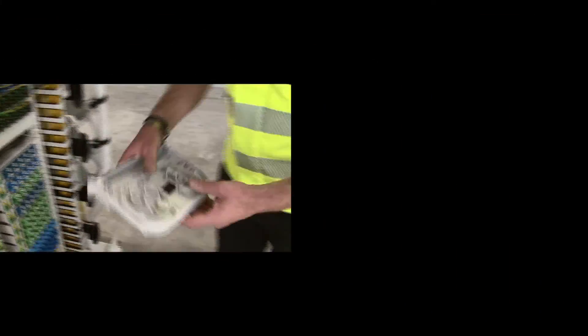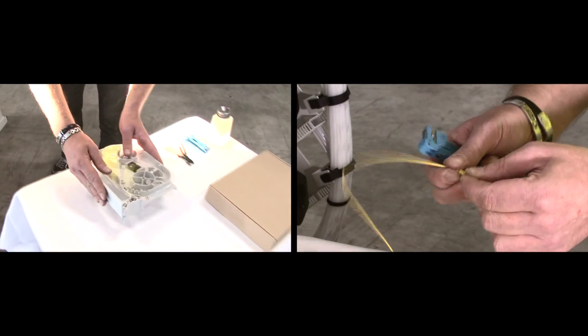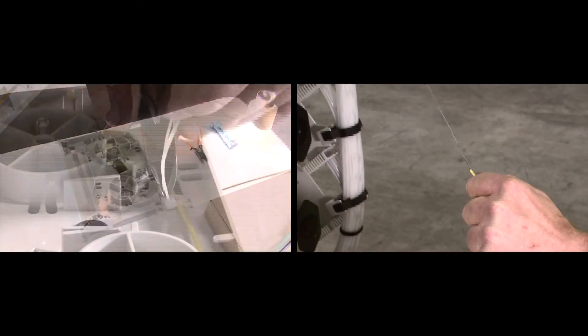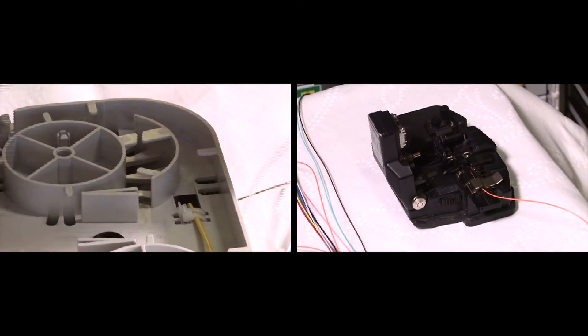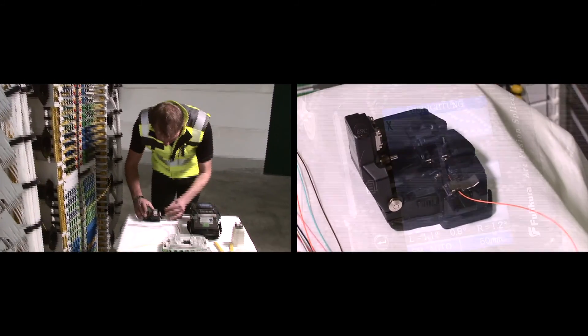Once swiveled out, they can be removed completely from the cabinet thanks to their integrated extra-length storage area, allowing you to do splicing outside the rack in a very comfortable and easy way.